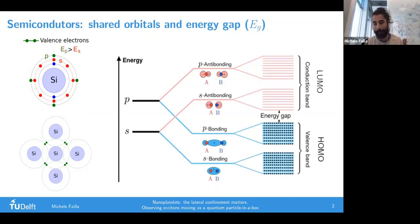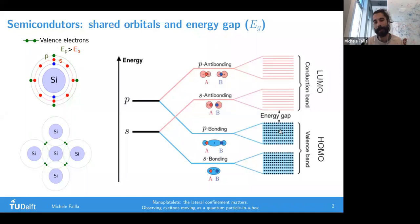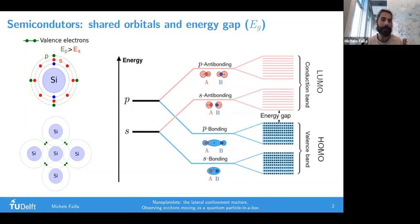The valence band is completely full of electrons and the conduction band is completely empty, and they are separated by this energy gap. For people working with molecules, you can link these two terms with the LUMO and HOMO - the LUMO is the lowest unoccupied molecular orbital and the HOMO is the highest occupied molecular orbital.